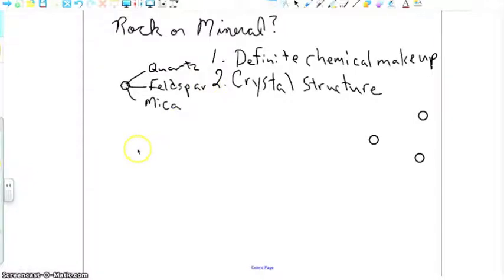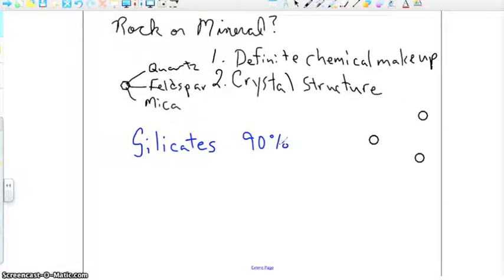Now, there are going to be groups of minerals. Scientists have decided that the most common groups of minerals are called silicates. Now, silicates are made of oxygen and silicon. And that's where you get the term silicate from. Silicates are so common that the book is going to tell you that about 90% of the earth's crust, of the minerals in the earth's crust, are silicates.